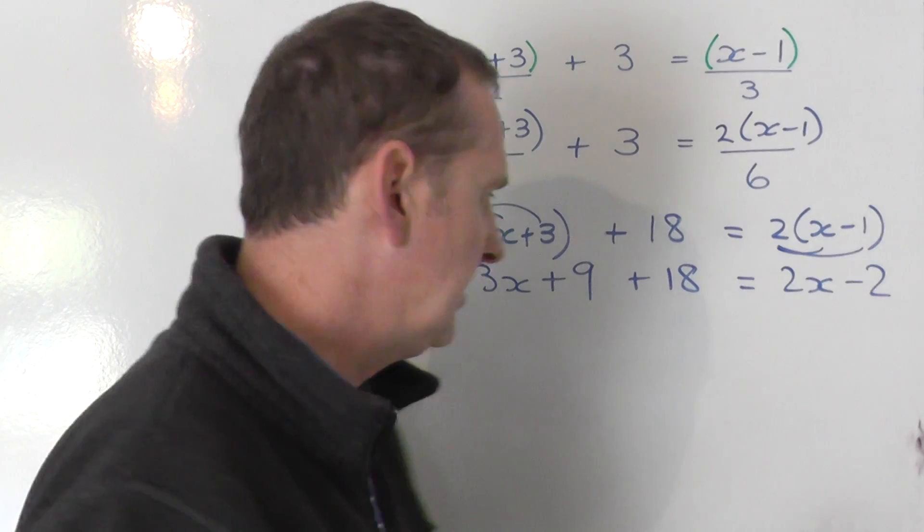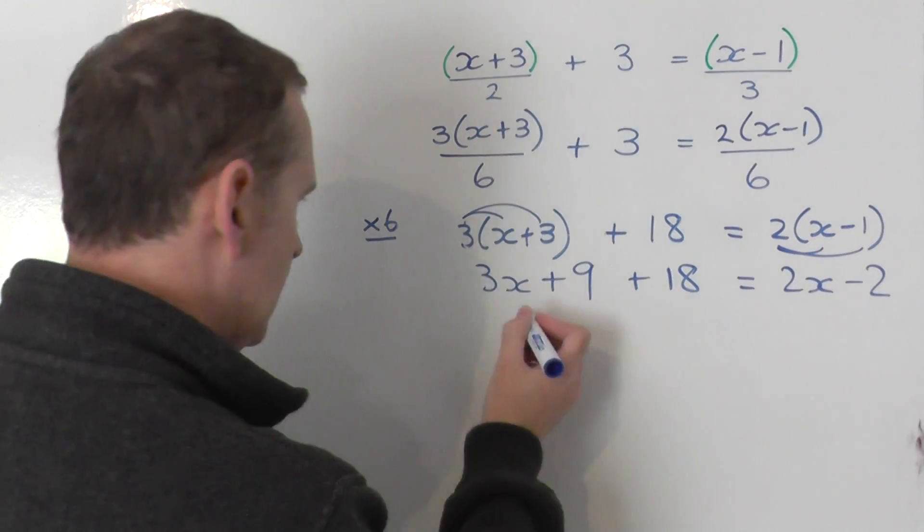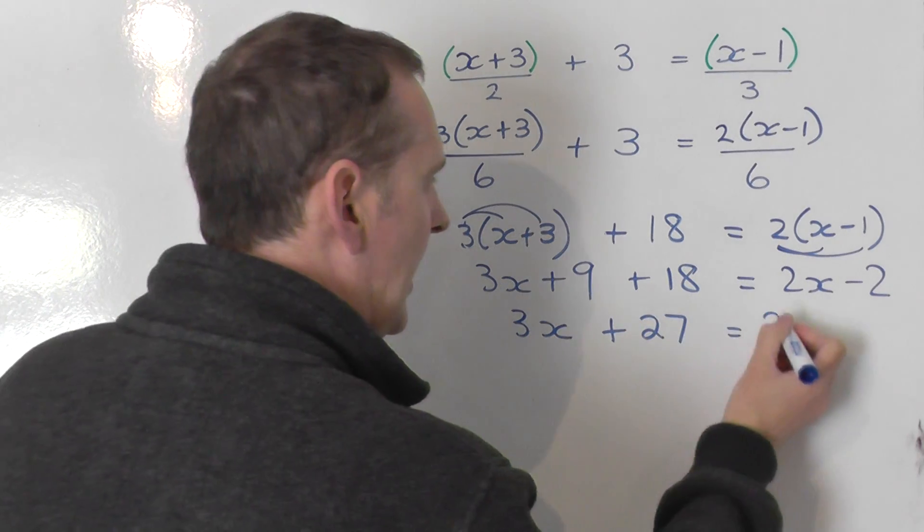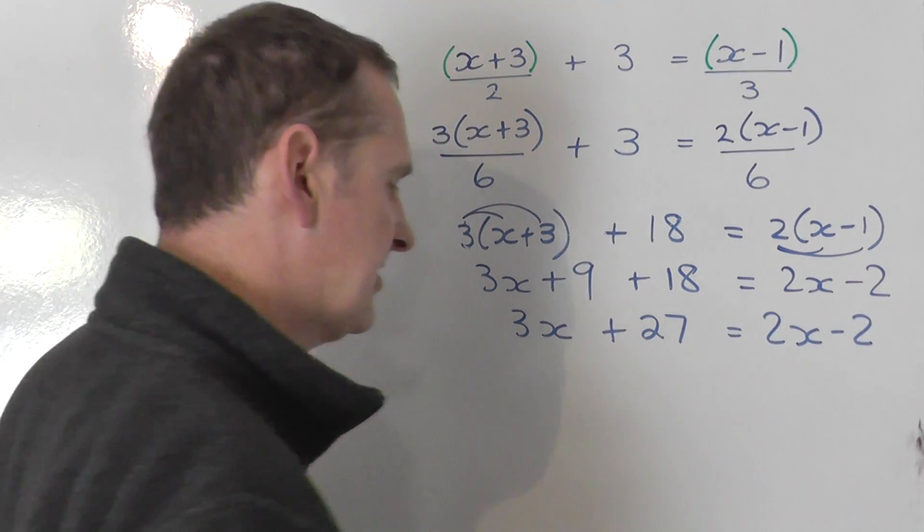Let's just tidy up things on the left, because the two numbers there, 9 and 18, go together. So you get 3x plus 27 on the left, and the right-hand side remains unchanged.